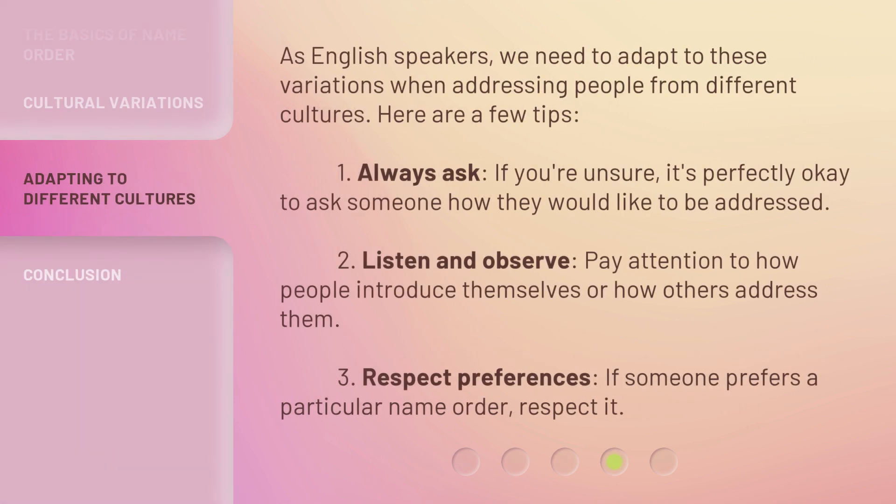As English speakers, we need to adapt to these variations when addressing people from different cultures. Here are a few tips. One, always ask — if you're unsure, it's perfectly okay to ask someone how they would like to be addressed. Two, listen and observe — pay attention to how people introduce themselves or how others address them. Three, respect preferences — if someone prefers a particular name order, respect it.